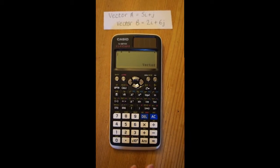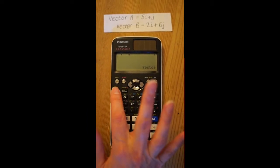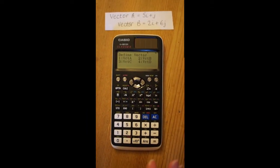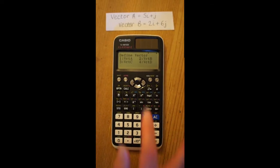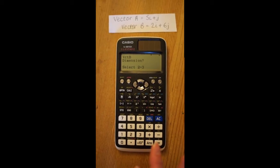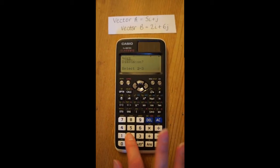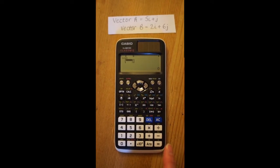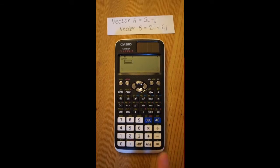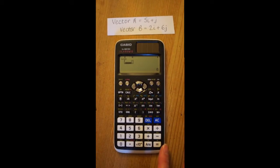Press AC to enter vector B, press option again. 1 for define vector, choose 2 for vector B. Now we enter vector B in the same way as we did for vector A. Select 2 for the dimension, then press 2 for the i equals, 6 for the j equals, and then AC.